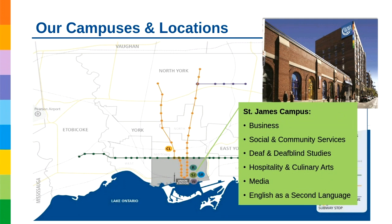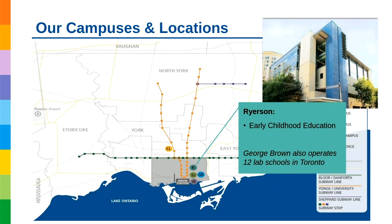Moving on to the Ryerson campus — a building we share with Ryerson University. The only programs offered here are early childhood education. We also operate 12 lab schools in Toronto, which are childcare centres where our students get practice working with kids. On a personal note, my daughter went to a George Brown daycare and as a mother I was very impressed with the education she received at such a young age.